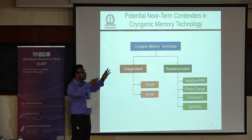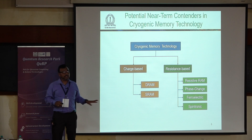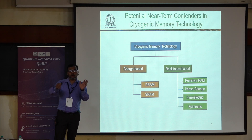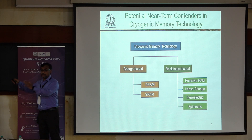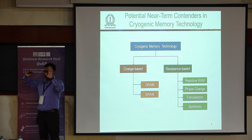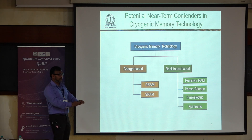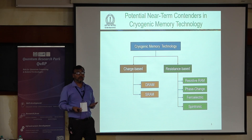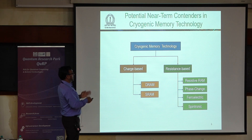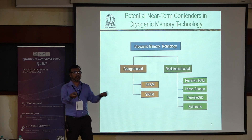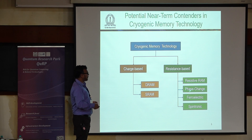Many device and material systems have been explored for cryogenic memory technology. Most are based on conventional technologies; some are based on Josephson junctions — superconducting insulator superconducting devices — but those are still at the research level. I'm focusing on near-term contenders: well-established technologies that can be explored for cryogenic memory. These divide into two categories: charge-based technologies like DRAM and SRAM, and resistance-based memories like resistive RAM, phase change, ferroelectric, and spintronics.